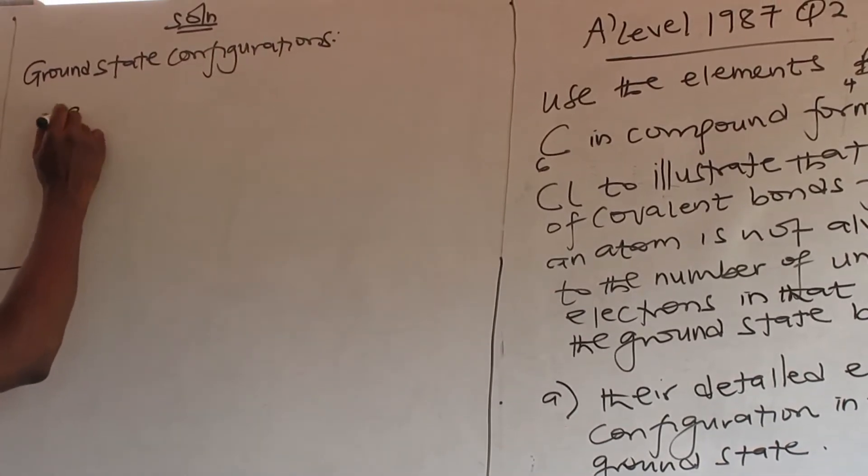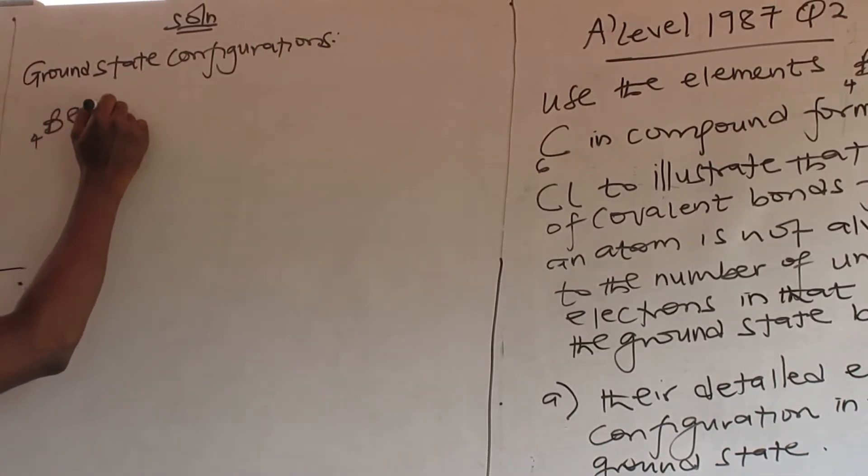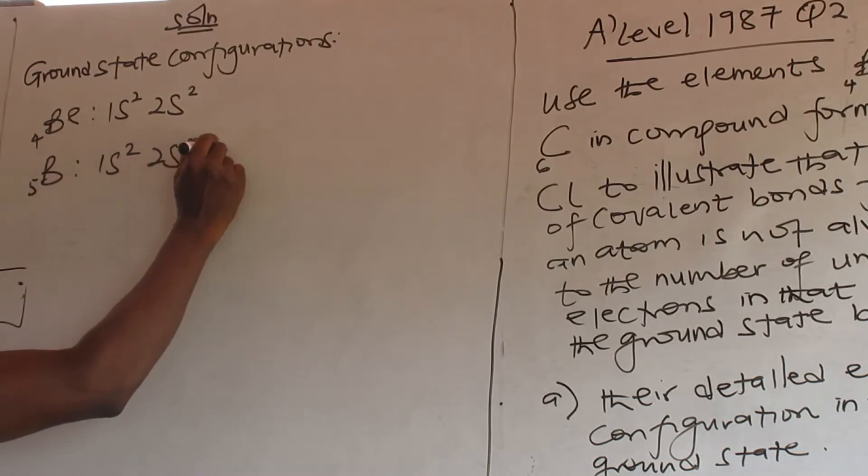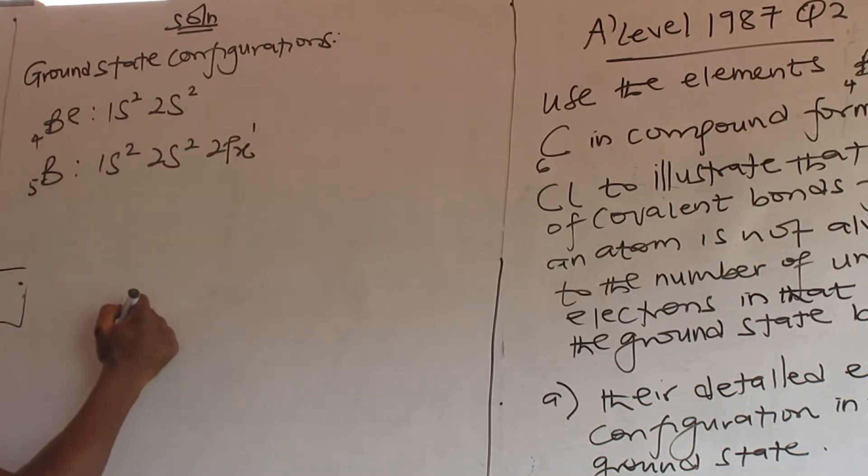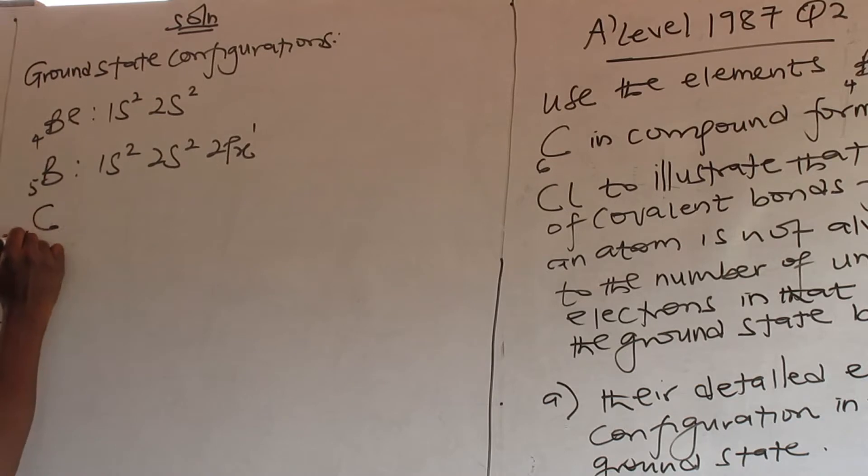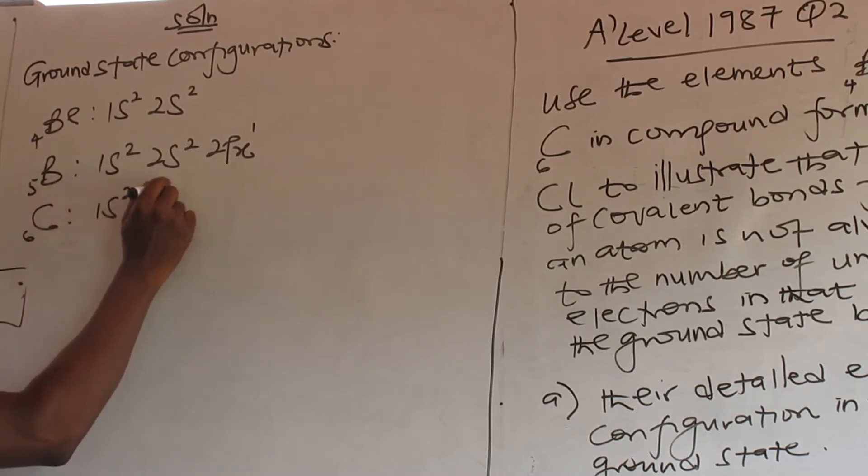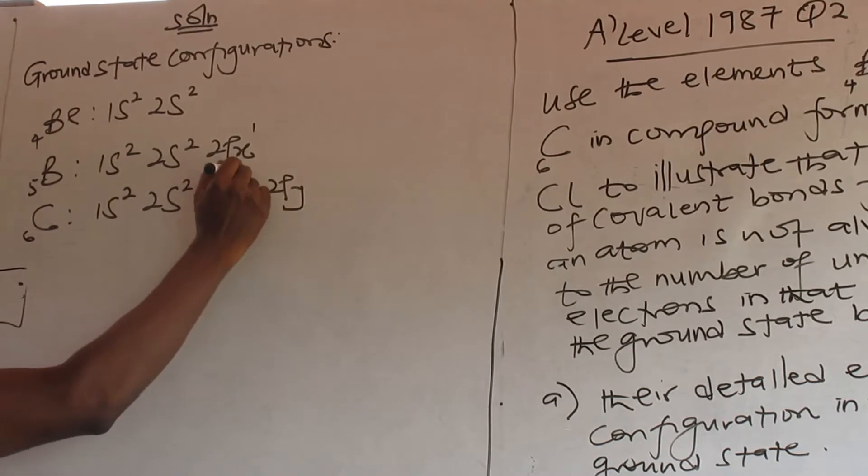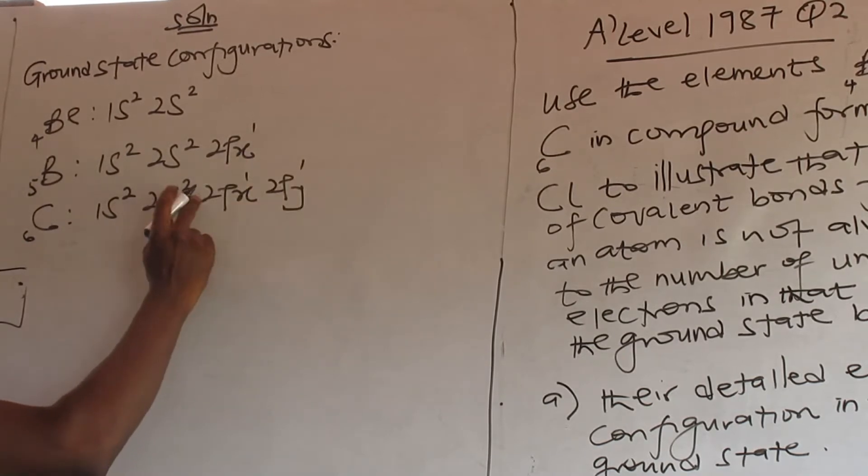Beryllium: 1s² 2s². Boron: 1s² 2s² 2px¹. Carbon: 1s² 2s² 2px¹ 2py¹. We have this right. 4, 5, 6. Good.